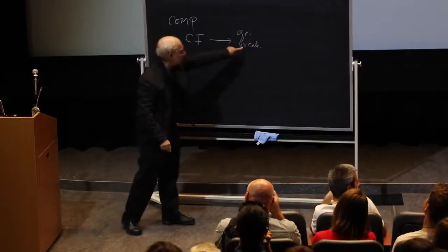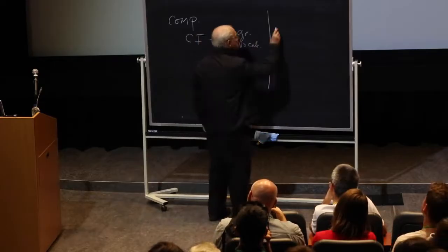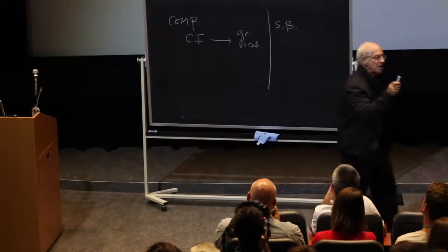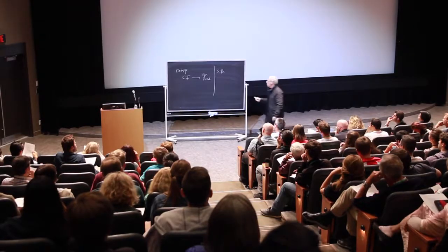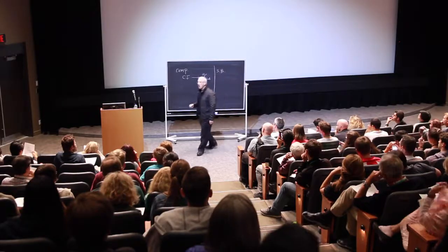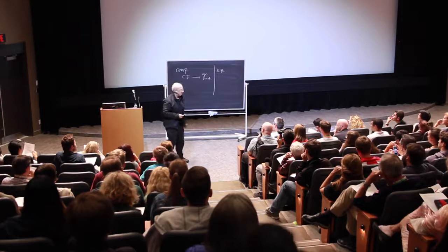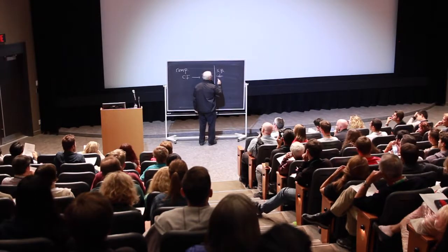The rival hypothesis, we call it skill building, says the causality goes in the other direction. First, you learn your skills consciously. You learn the grammatical rules. So you do conscious learning first of vocabulary, grammar.